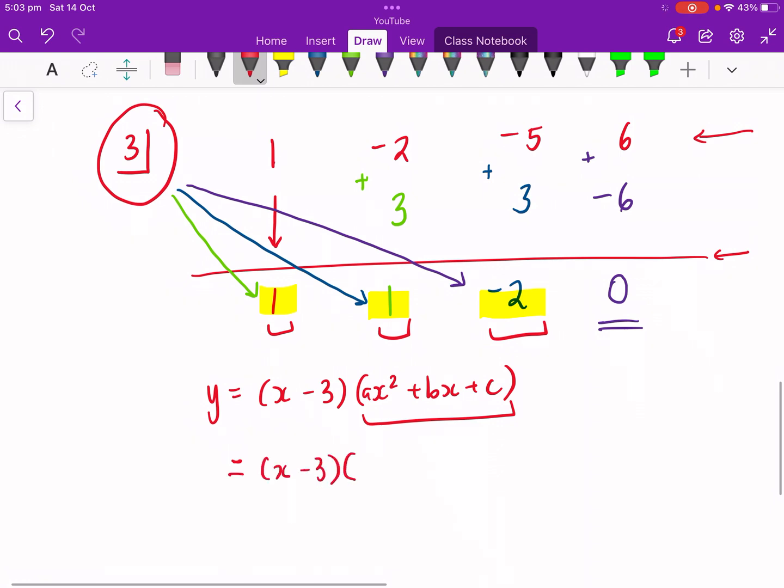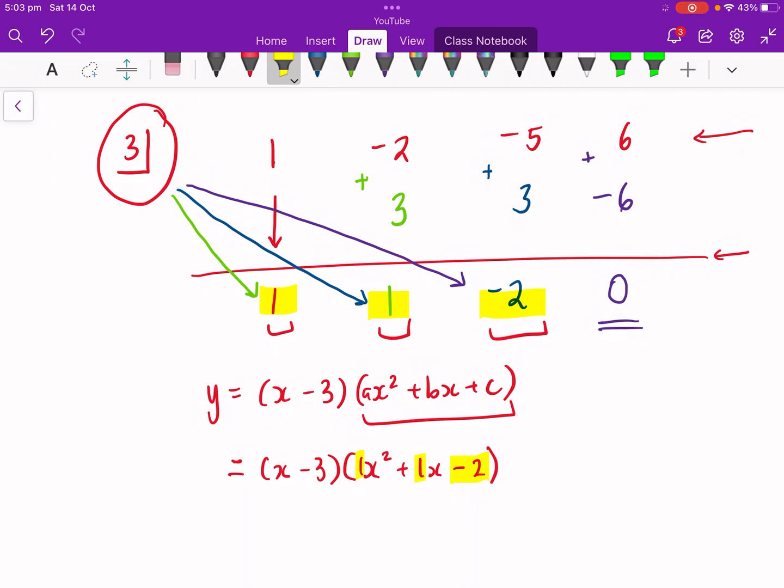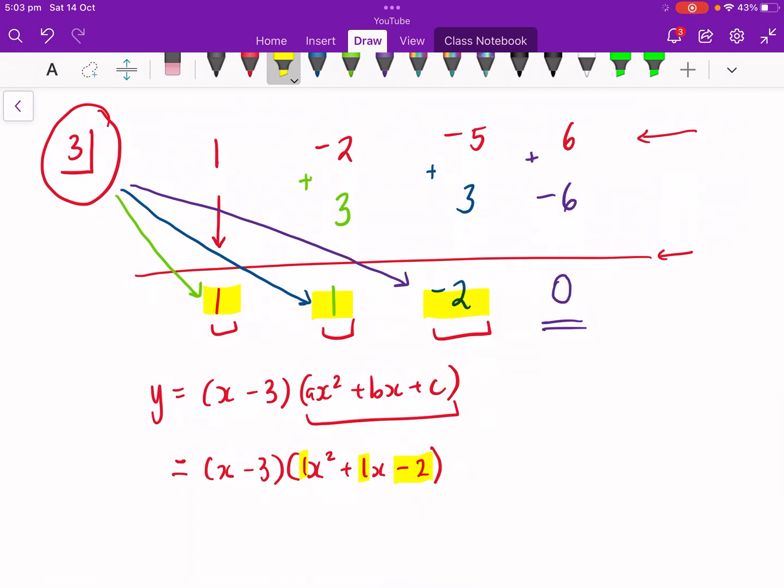x minus 3. 1x squared plus 1x plus, sorry, minus 2. So just to show you, I put the ones in there. Of course, you don't have to. But look at that. We found a, b, and c through what we call synthetic division. So this process that I've just shown you up here with the arrows is what we call synthetic division.